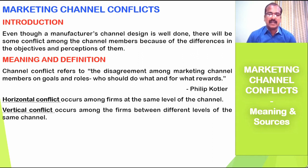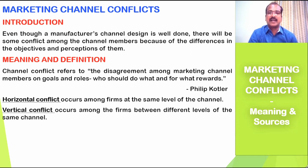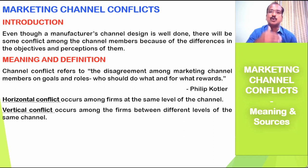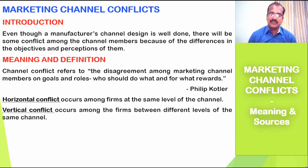Vertical conflict occurs among the firms between different levels of the same channel — for example, conflict between a wholesaler and a retailer. That's a good example because they belong to two different levels in the same channel. If there is a disagreement between firms belonging to two different levels in the same channel, it refers to vertical conflict.